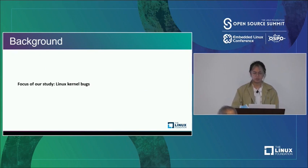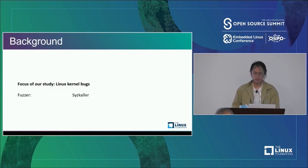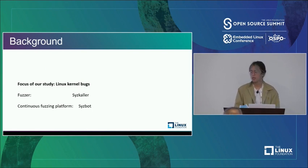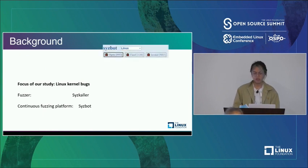A little background: our study focused on the Linux kernel. The most efficient way to find bugs is fuzzing — an automatic process that tries to discover software bugs by giving concrete test cases. The state-of-the-art for Linux kernel is SysCaller. The continuous fuzzing platform SysBot is the biggest one targeting Linux kernel. In the past four years, SysBot found more than 4,000 valid bugs; 3,000 have already been fixed and 1,000 are still pending patches.